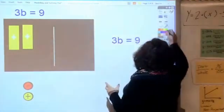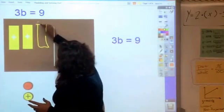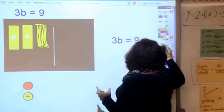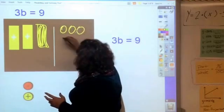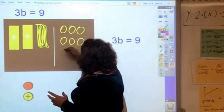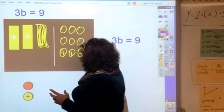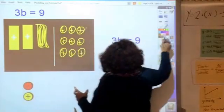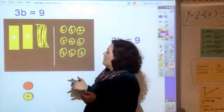Here we have 3b = 9. I'm just going to draw it as three bars for the variables, and it equals nine positives: one, two, three, four, five, six, seven, eight, nine. That's how you represent it visually with the model.